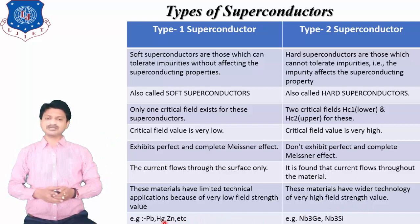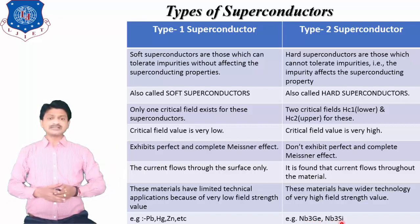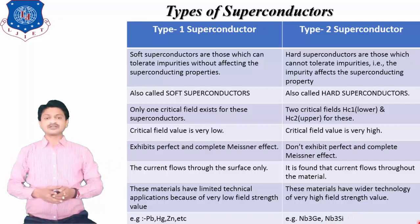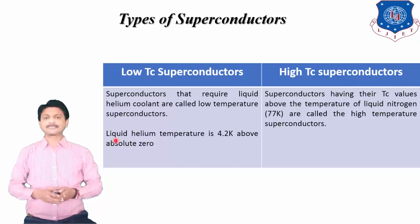Examples of Type 1 superconductors include silver and zinc. Examples of Type 2 superconductors include niobium-germanium and niobium-tin. Now let's move to another classification: low temperature superconductors and high temperature superconductors.